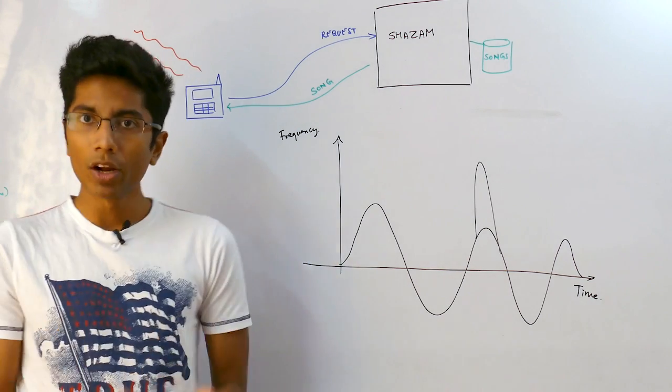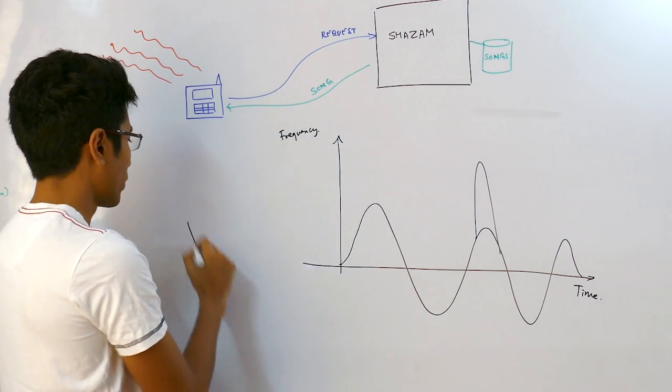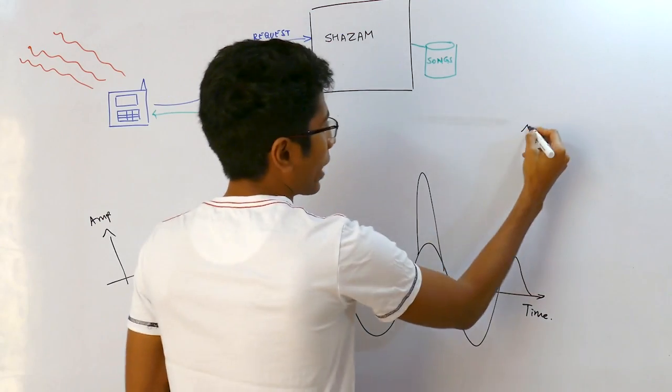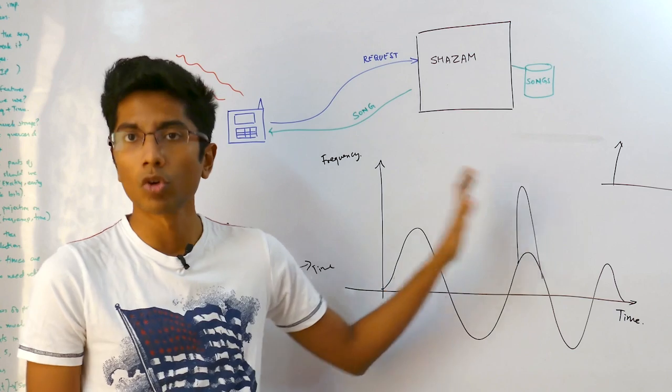So instead we take multiple parameters. We are going to draw a graph of time versus frequency, a graph of time versus amplitude, a graph of time versus phase and so on. Taking multiple features makes the system more robust.